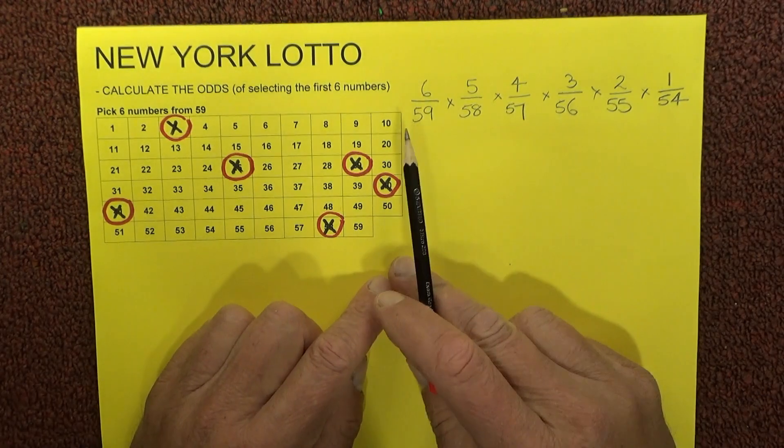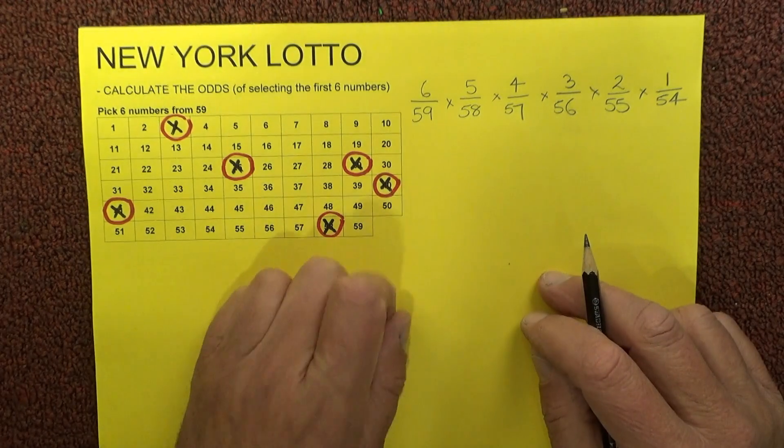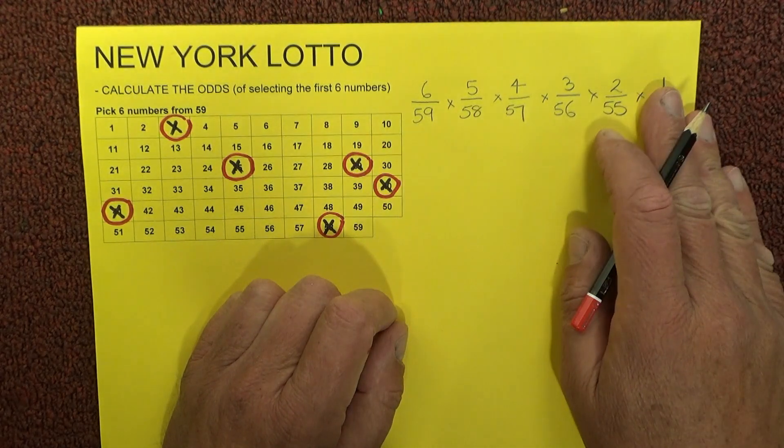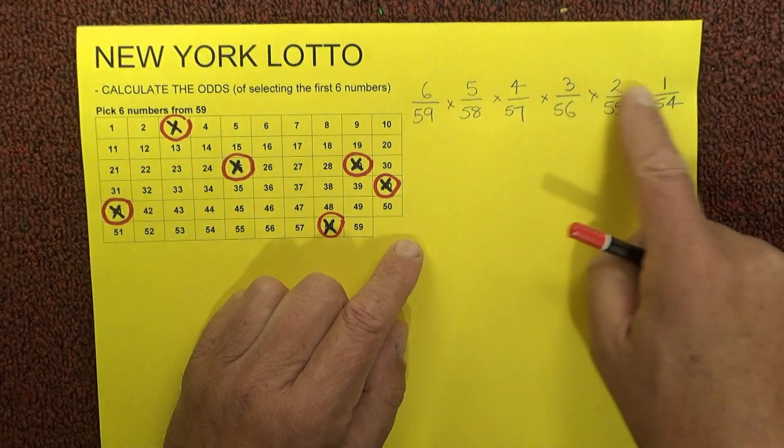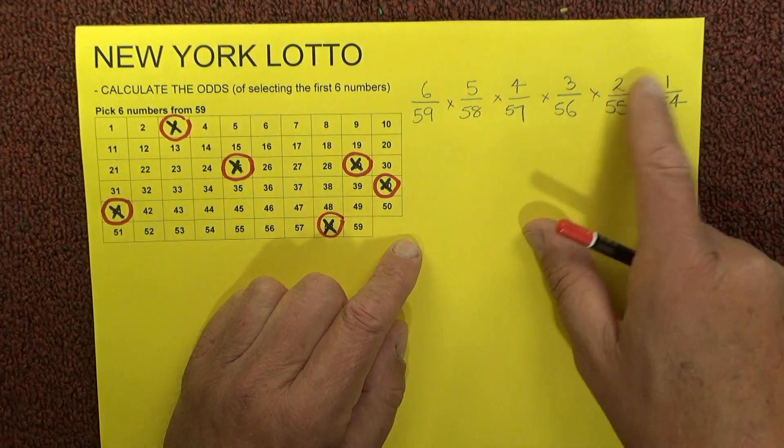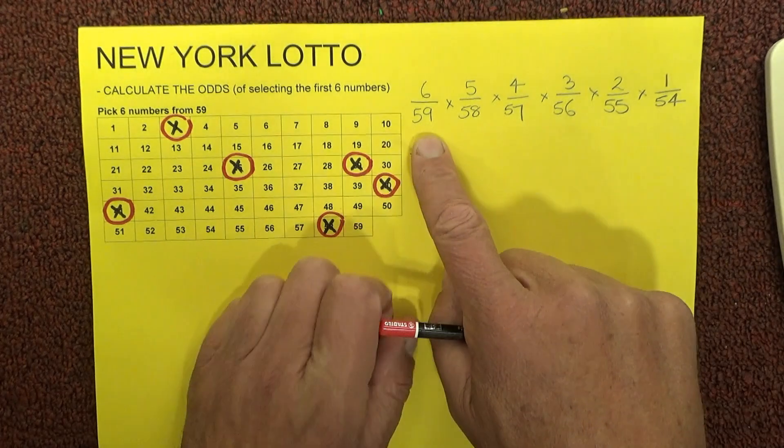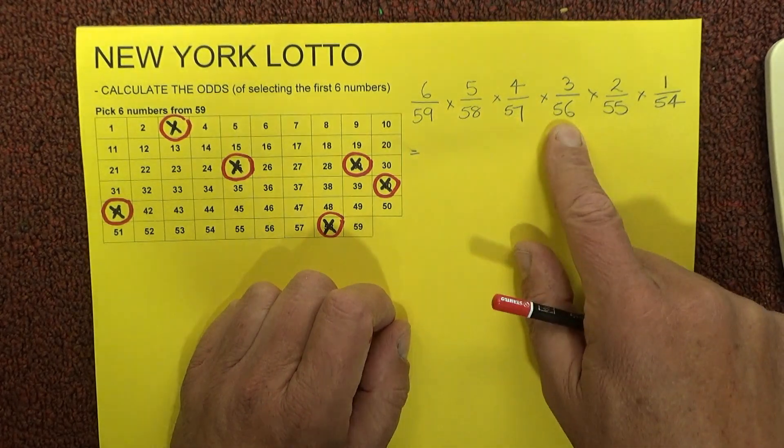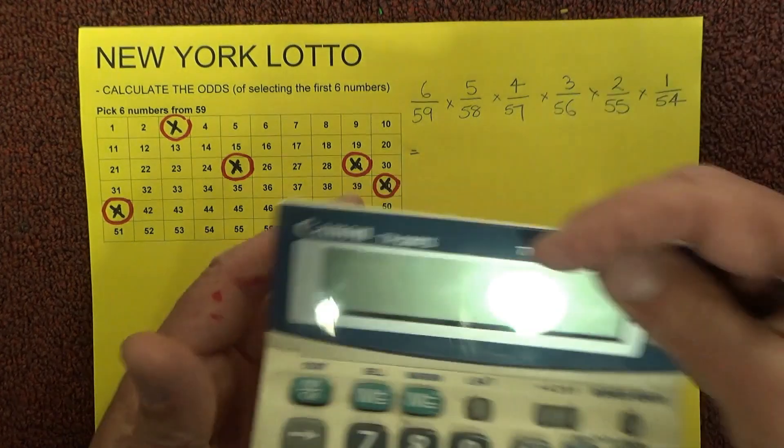But anyway, what we're doing on this video is working out the odds. What we need to do is take all those odds for the individual numbers, multiply them out, and come up with an answer. First of all, we're going to multiply all the numbers across the top: 6 times 5 times 4 times 3 times 2 times 1. Then secondly, we'll multiply all the numbers out across the bottom: 59 times 58 times 57 times 56 times 55 times 54.